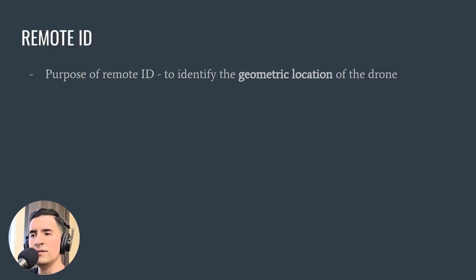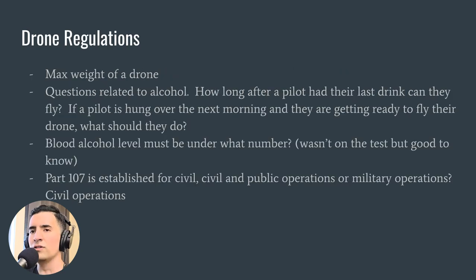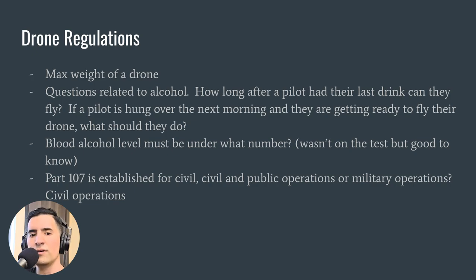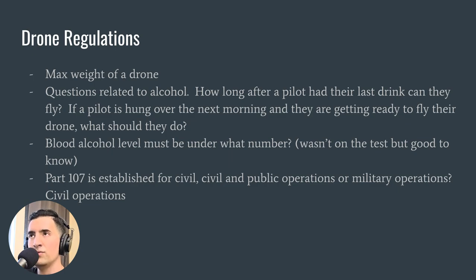There was a question on remote ID — what's the purpose of it? It's basically to identify where the drone is. There are a lot of questions on drone regulations. Know the max weight of a drone under Part 107. They'll try to trick you — the answer choices were 0.55 pounds up to 55 pounds, with options like 54.99 pounds and below, or 55 pounds and below.